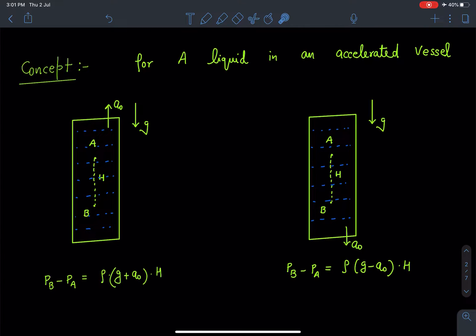Here in this case, this vessel is moving upwards with acceleration of a_not, so this pressure difference becomes P_B minus P_A is equal to ρ(g + a_not) times H. Similarly here, we can see this vessel is moving down with acceleration of a_not downwards in gravity of g.